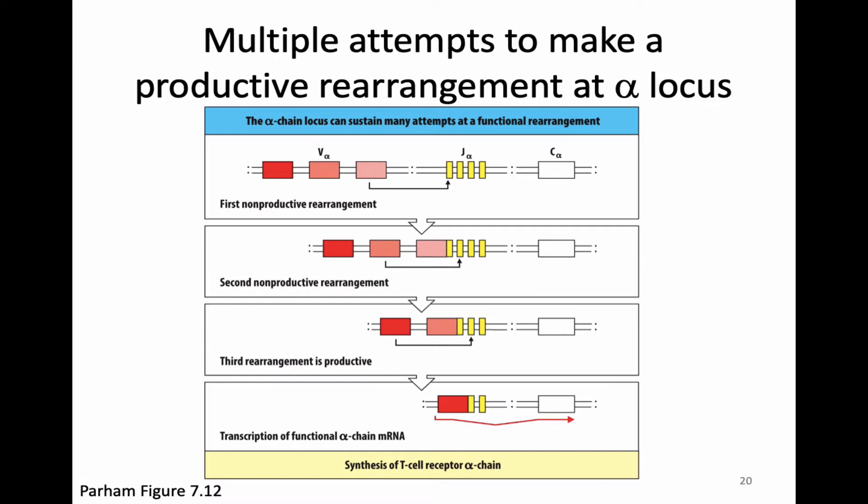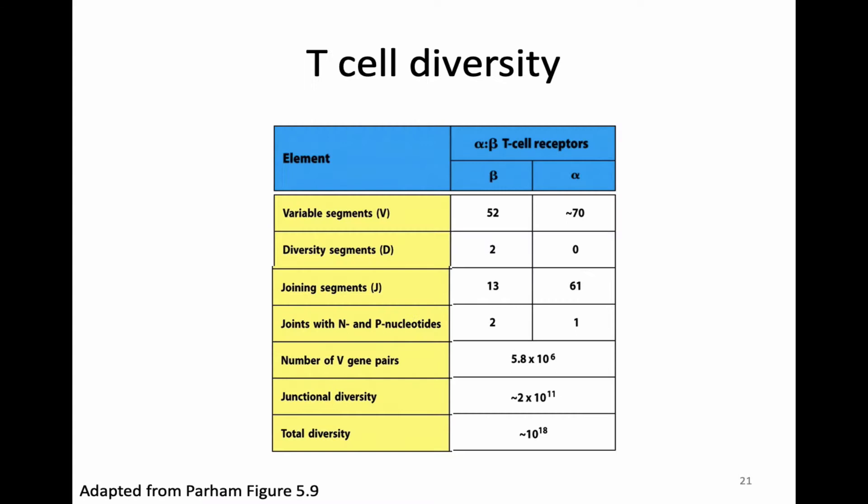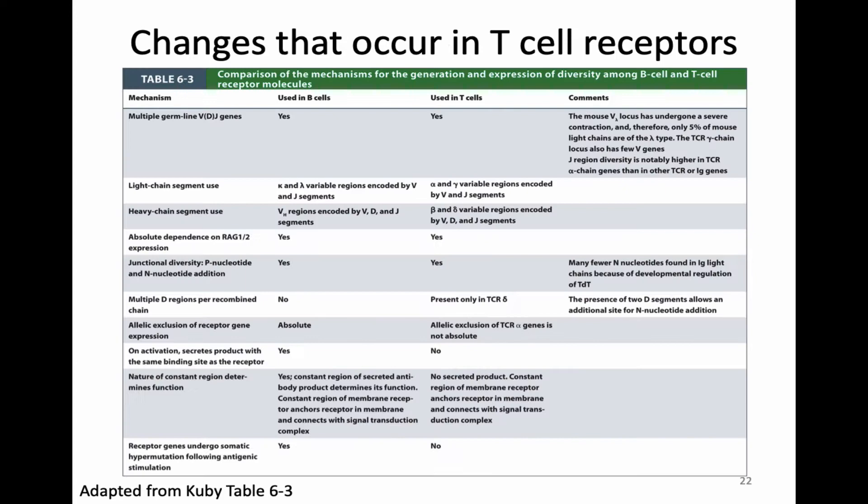With alpha, the cell is going to be able to try many times to make a productive rearrangement. If an internal V and an internal J are used, we can have more rearrangements happen in order to produce a functional alpha chain. In total, all of these things — the V, D, and J segments, the P and N nucleotides — lead to T cell diversity in the same way that these types of processes led to B cell diversity.